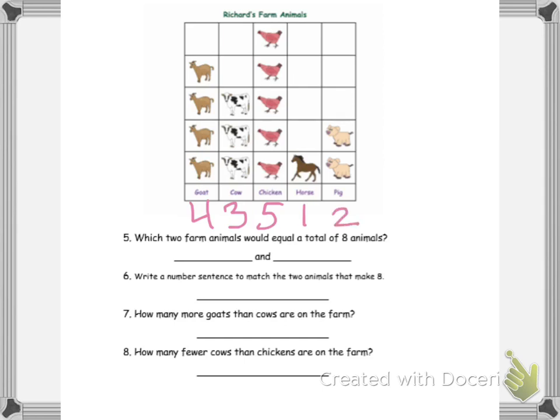So it says which two farm animals would equal a total of eight animals? So which two? Well, four, three we know is seven. What about three plus five? Five, six, seven, eight. Oh, so that would work.